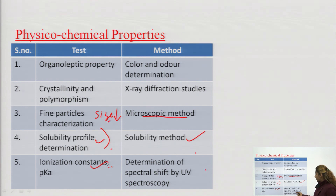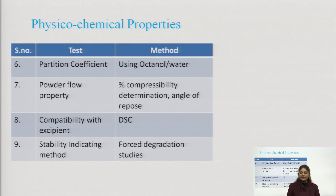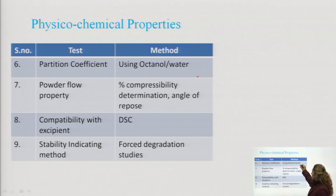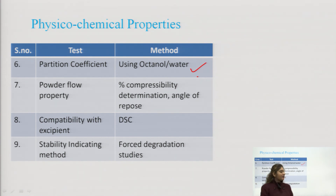Next property is partition coefficient. Partition coefficient helps determine how much of the drug is soluble in the organic phase and how much is soluble in the aqueous phase — it is the ratio of the drug's solubility in both phases. This can be determined using the shaking method with octanol and water.